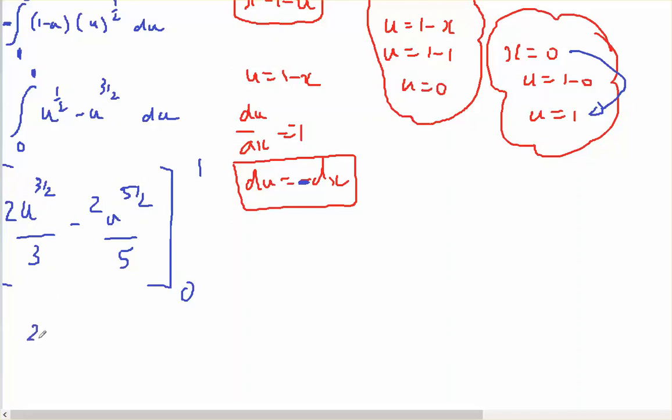So when I put my 1 in, I'm going to have 2 thirds minus 2 fifths minus nothing plus nothing, which will equal 4 on 15, 10 minus 6, which gives me 4 fifths as being the answer.